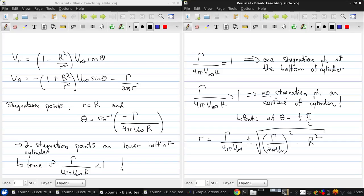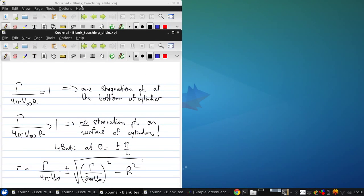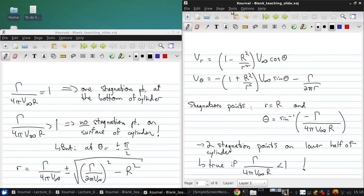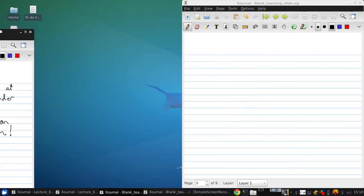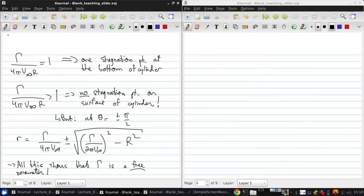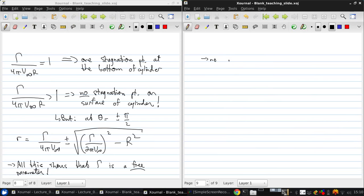Now what does all this show us? All this shows that the circulation gamma for flow over a rotating cylinder is a free parameter. You can choose any value of gamma that you like and you'll be able to construct a sensible flow field. There's no unique value.